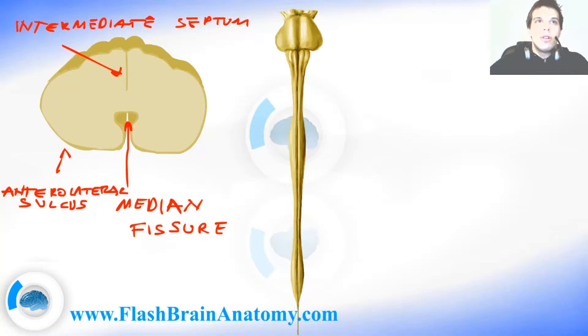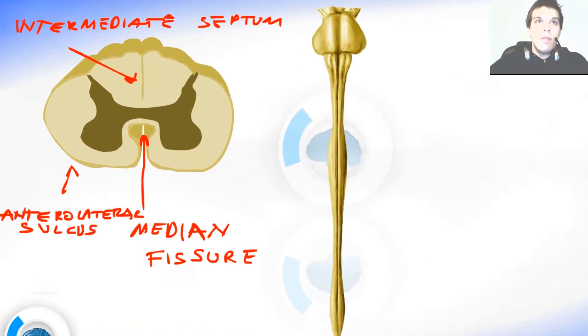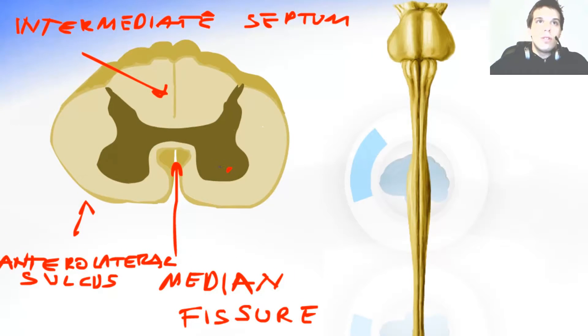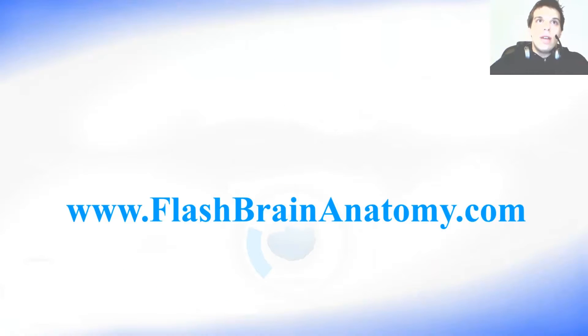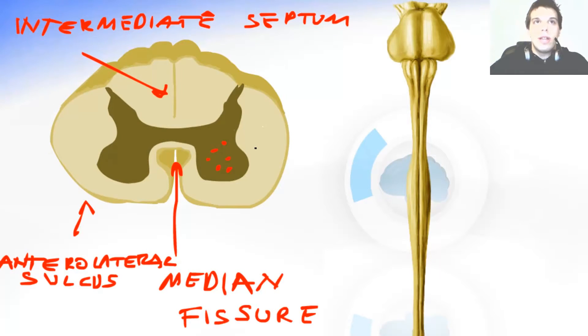Now I drew further the gray matter. The gray matter is the place where neurons, the bodies of the neurons are. And the white matter over here is the place where the axons of the neurons, the tracts, they have the myelin sheath. That's why they have this white color. I explained that in the lesson about the nerve. You can go back and watch that video if you don't understand this.